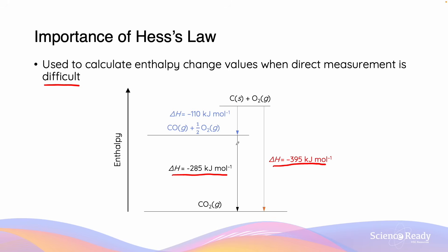Because the enthalpy changes shown by the black and red arrows would be more easily measured experimentally, we can use Hess's law to calculate the enthalpy of formation of carbon monoxide — the blue arrow — using the enthalpy measured from those two reactions. The one-step and two-step reactions must have the same enthalpy change because they both start with the same reactants and end with the same products, despite the difference in the number of steps.